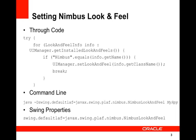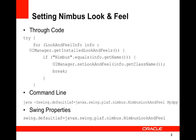You can also set Nimbus on the command line by specifying the swing.defaultlaf property, and finally you can set it in the swing properties file by adding the appropriate line to the java.home/lib/swing.properties file. Note that if the swing properties file does not yet exist, you need to create it.